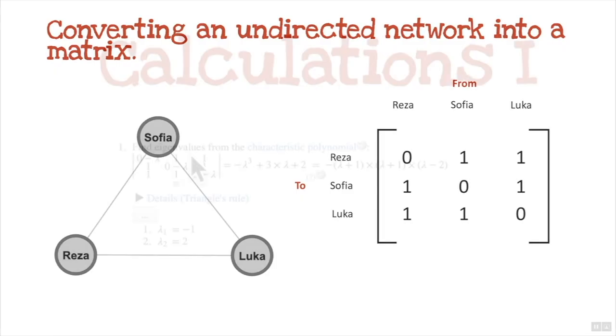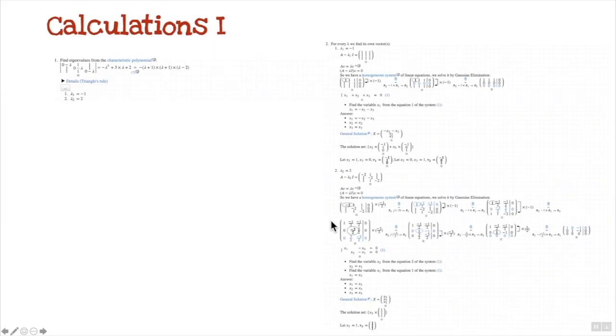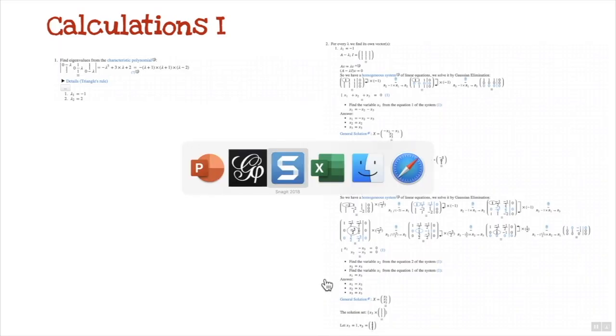Here are the calculations that you're going to use to work out the eigenvectors. You first of all have to work out the eigenvalues for each of the nodes and then convert it into eigenvectors. I'm not going to go through all of this - you can see the calculations here, but I will show you a link to a website which will help with doing the calculations for you.